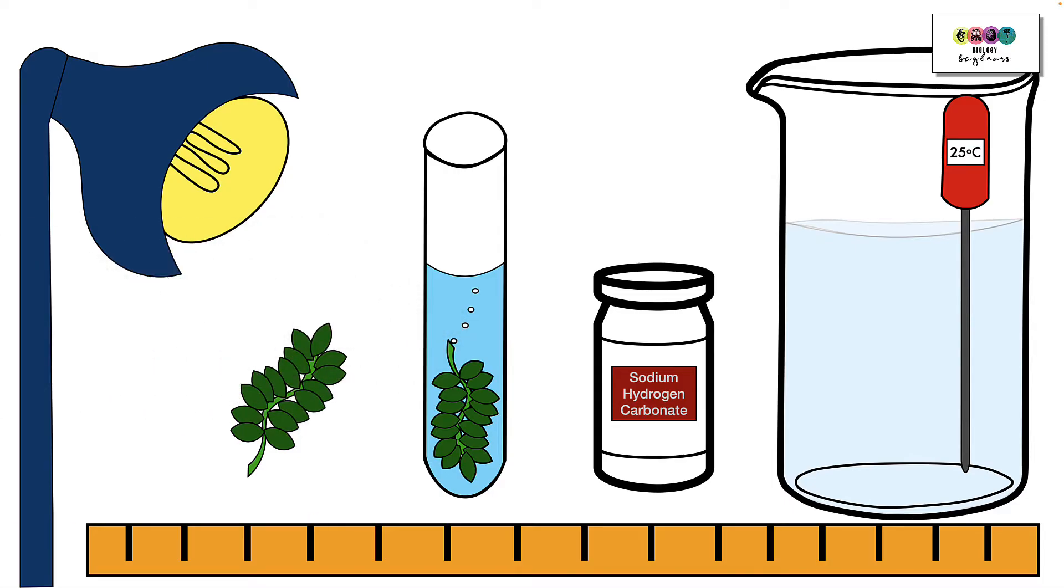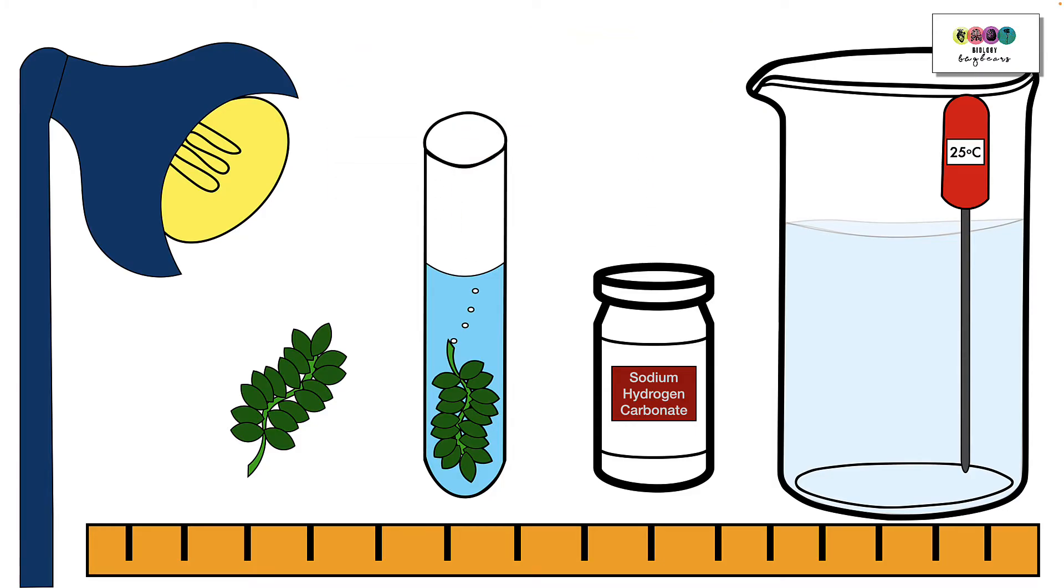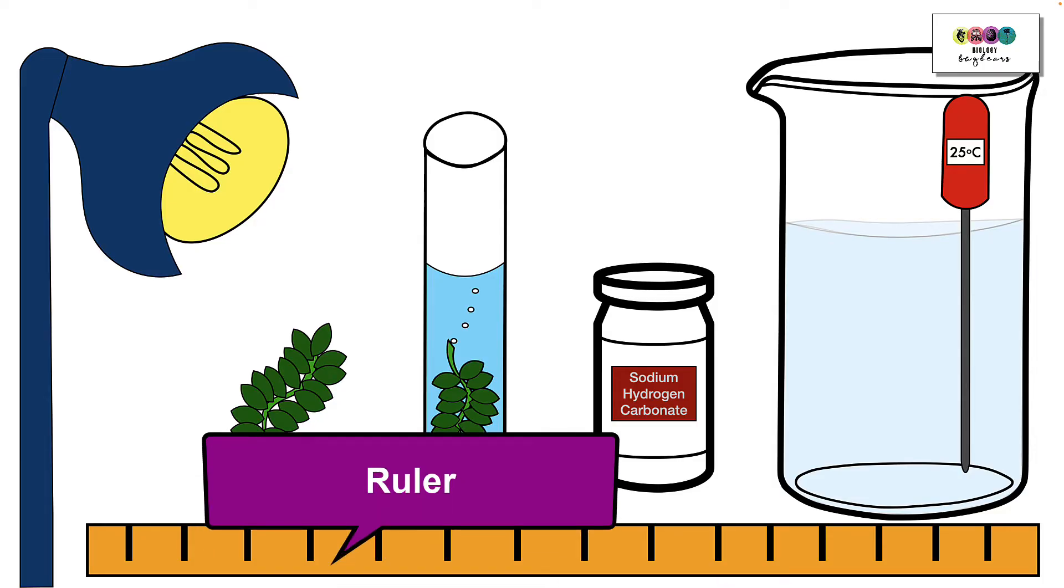Because light intensity is the only factor to be varied, we have to ensure there's a good supply of carbon dioxide. You can do this by either using pond water or you can use sodium hydrogen carbonate solution. We're going to maintain temperature at 25 degrees Celsius using a water bath and checking it with a thermometer. The way in which we're going to vary light intensity is by using the ruler to measure distances to move the plant away from the lamp.